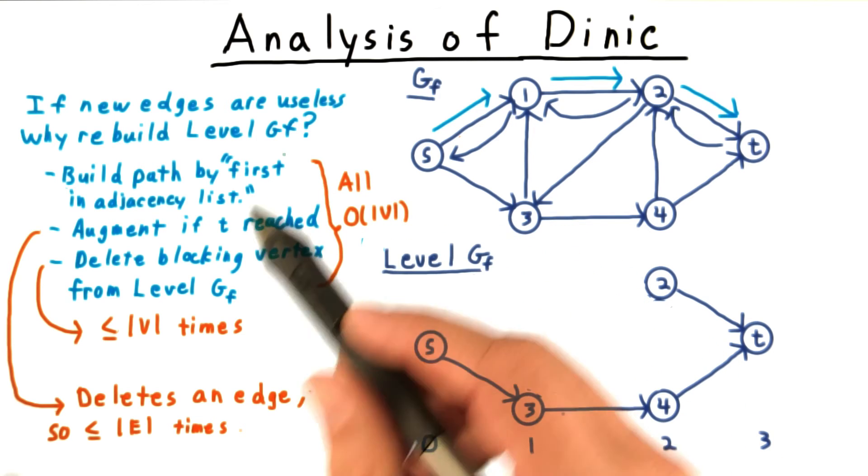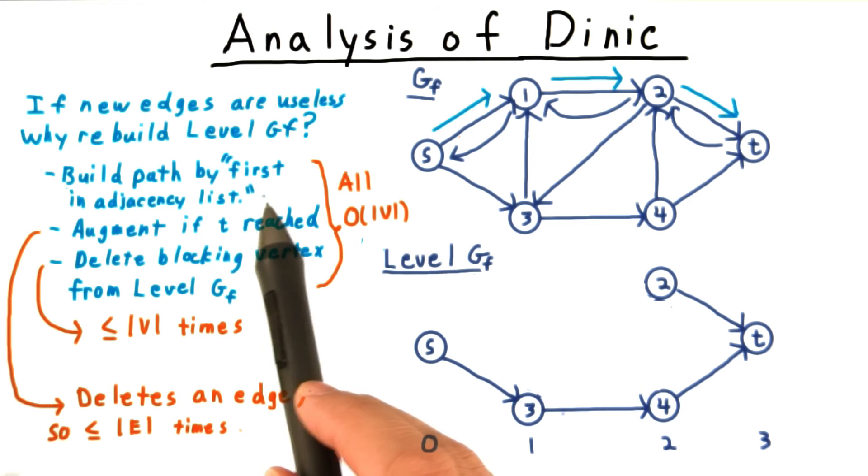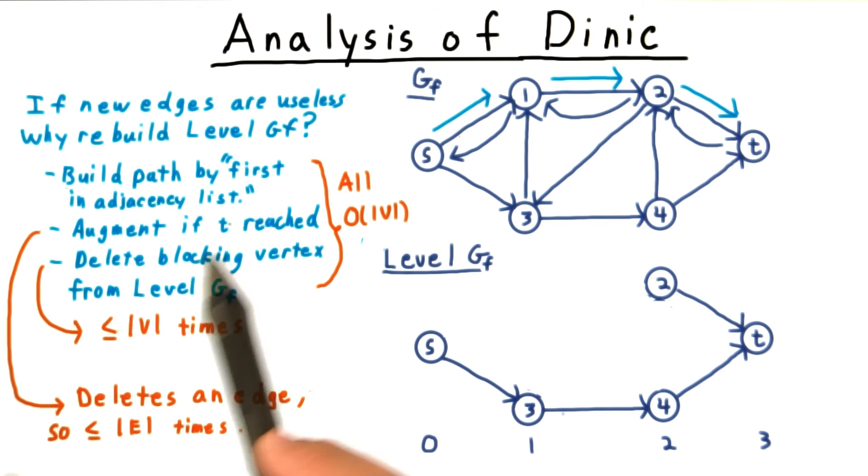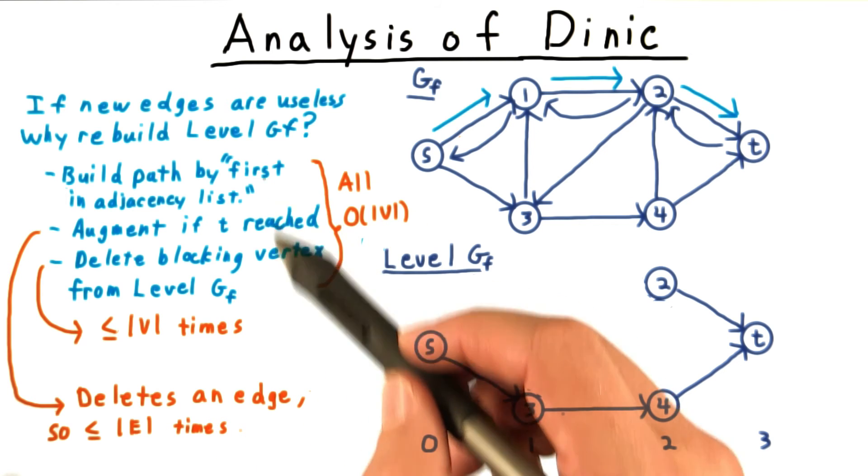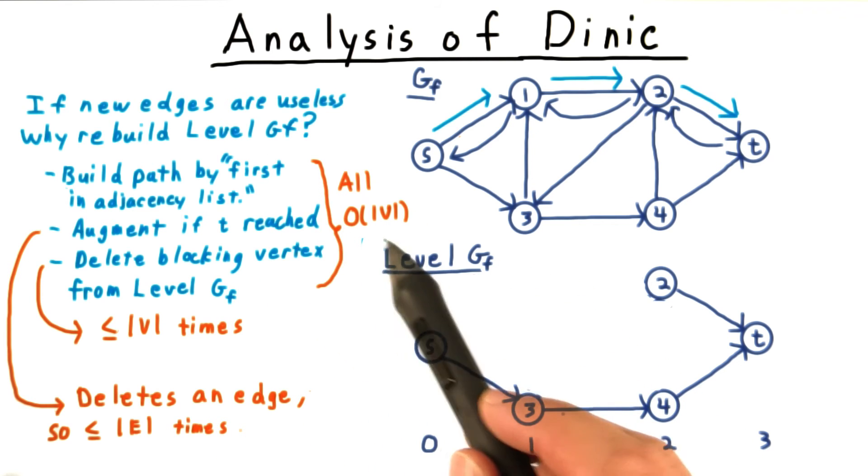This process of building the path by first in the adjacency list, and then augmenting or deleting a vertex as appropriate, each time that set of operations is done, only costs us order V time.